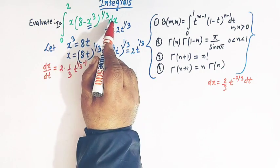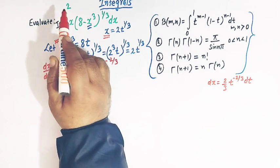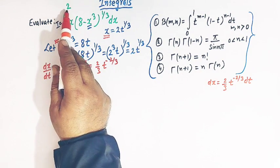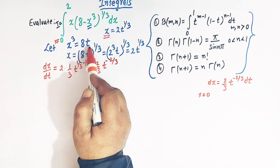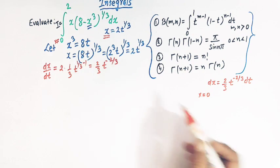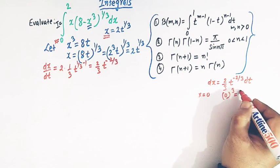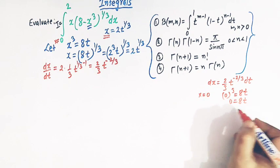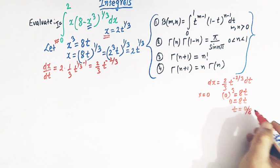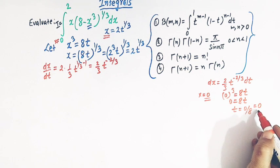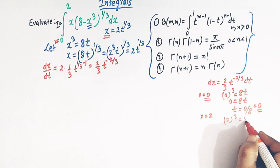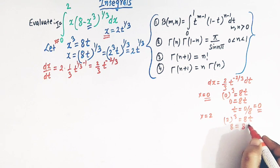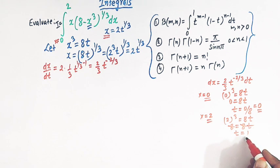The limits of integration vary from x equals 0 to x equals 2. When x equals 0, from the relation x³ equals 8t, we get 0 equals 8t, so t equals 0. When x equals 2 (the upper limit), we have 2³ equals 8t, that is 8 equals 8t, so t equals 1. So the new limits are t equals 0 to t equals 1.